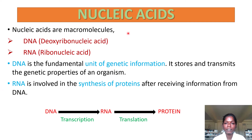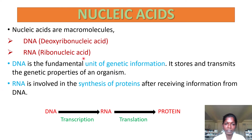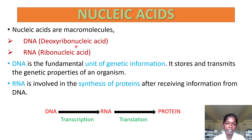The important role of nucleic acid is its involvement in the synthesis of protein. The two main classes of nucleic acids are DNA and RNA. DNA stands for deoxyribonucleic acid and RNA stands for ribonucleic acid. DNA is the fundamental unit of genetic information — it stores and transmits the genetic information of an organism. RNA gets involved in the synthesis of protein after receiving information from the DNA.